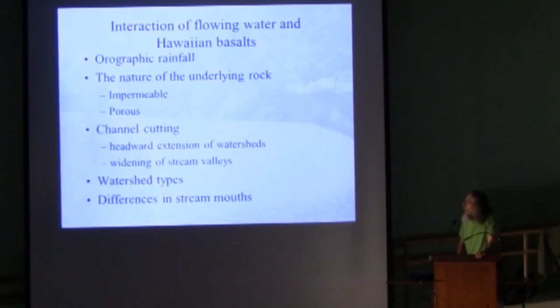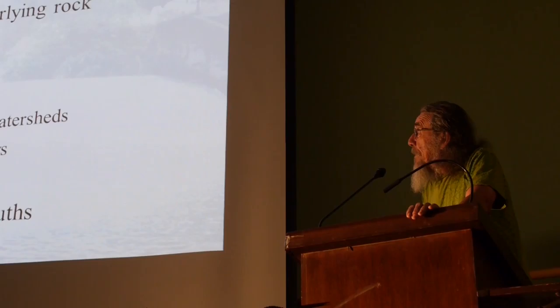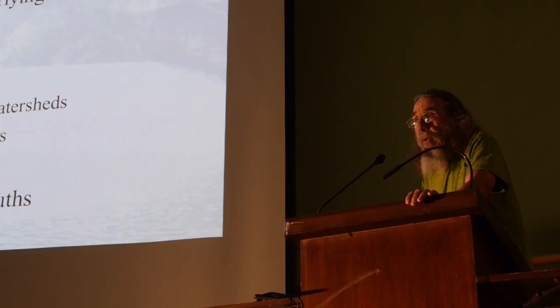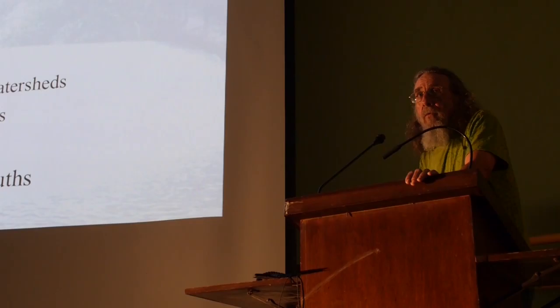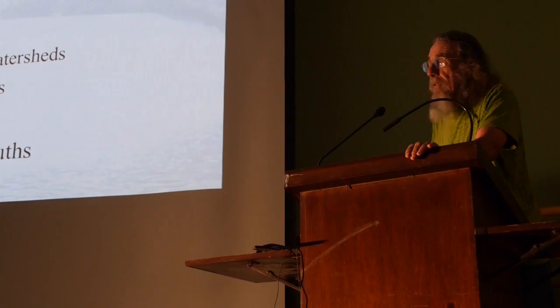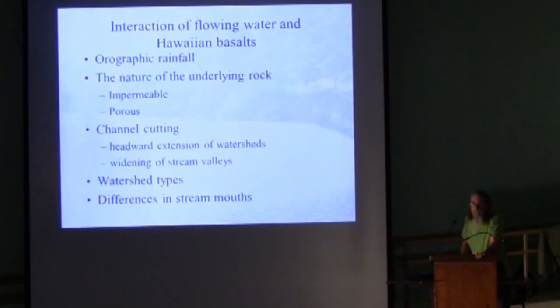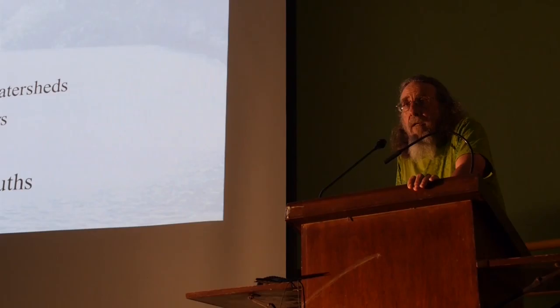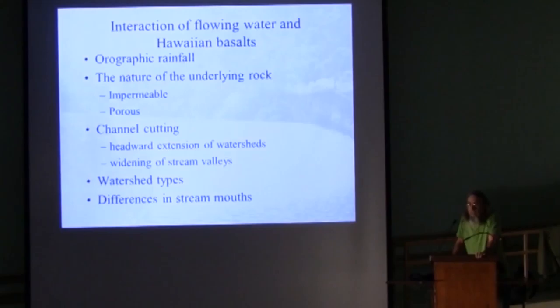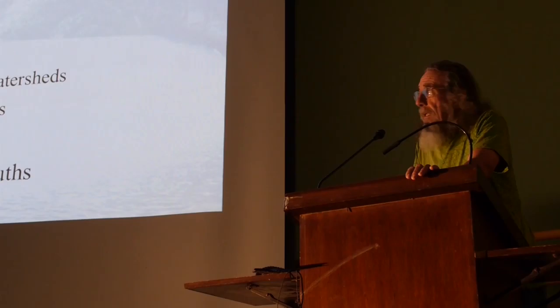What happens between this moving water, which has energy, and the rocks that make up the islands? The nature of the underlying rock matters — there are different kinds of basalts and the flowing water can operate on those differently. Rain also falls on other kinds of substrata — soils, gravels, and so on. But as the water moves it cuts channels, and this is going to be important when we get to the habitats of the creatures we're talking about.